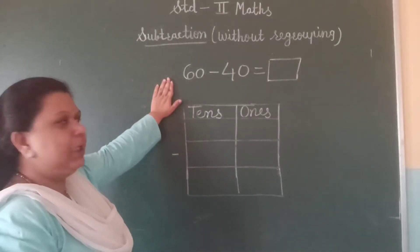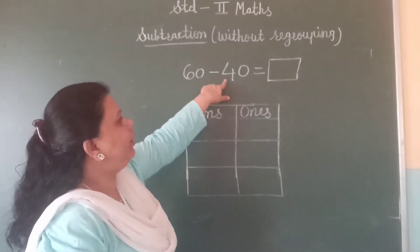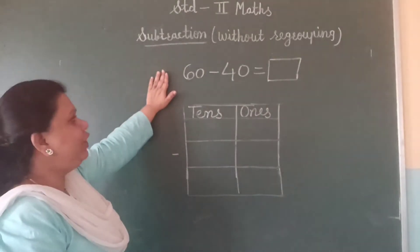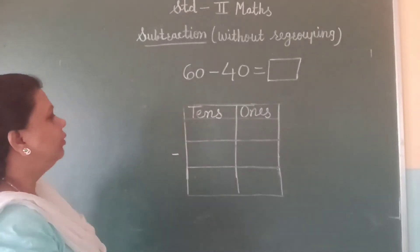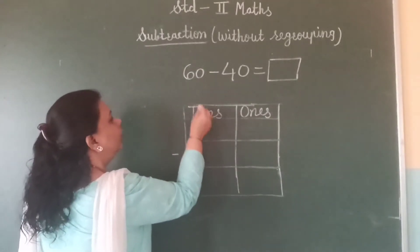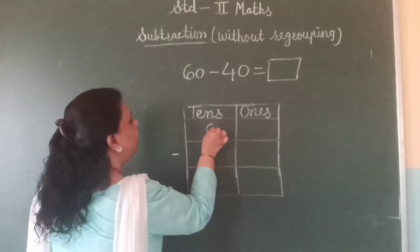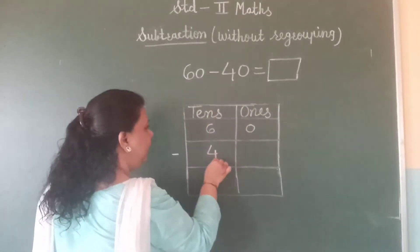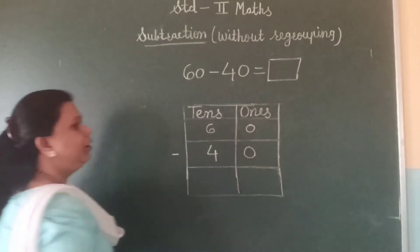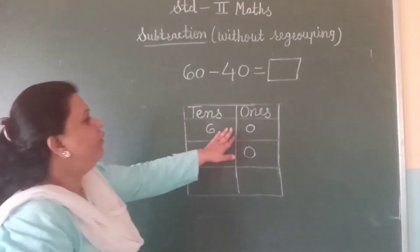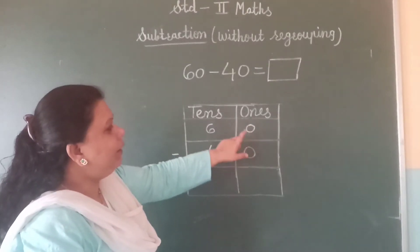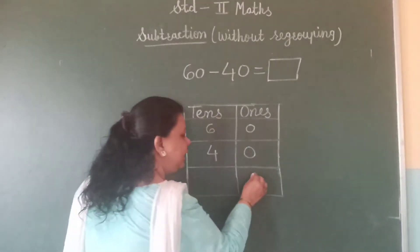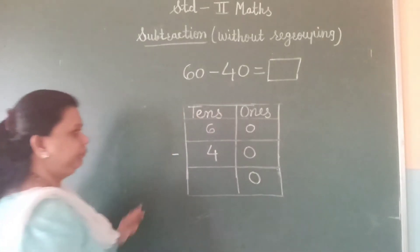Let us see the next example. Sixty minus forty is equal to how many? First, we will arrange these numbers in tens and ones form. In number sixty, six tens and zero ones. And in number forty, four tens and zero ones. First, we will subtract the ones place — zero minus zero is equal to zero.